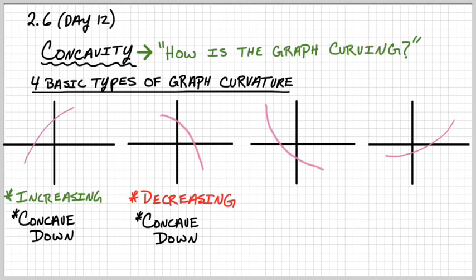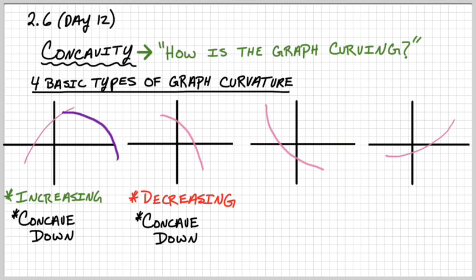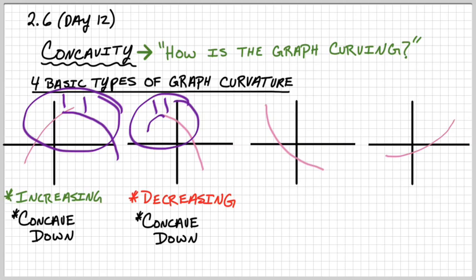So what does it mean to be concave down? Here's the way I like to think about it — whether it's increasing or decreasing, both of these graphs have a downward trend in their curve. You could think about it as a frowny face. If I extend the curve on this graph, it would be a frowny face — notice the downward curve on the frown. So these are both concave down, although one was increasing and one was decreasing.